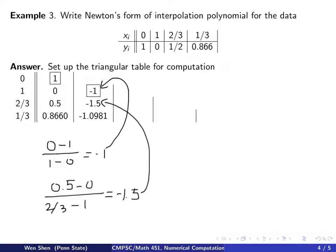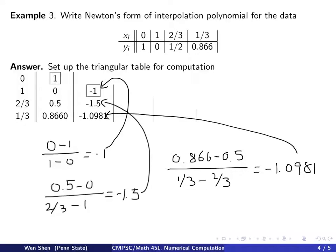And for the last number, it's computed by doing this minus that over this minus that. So that will be 0.866 minus 0.5 over 1/3 minus 2/3. And if you evaluate the values out, you get about negative 1.0981, and that's the number that goes in to the last position in that column. So once this is computed, then we're ready to go on to the next column.